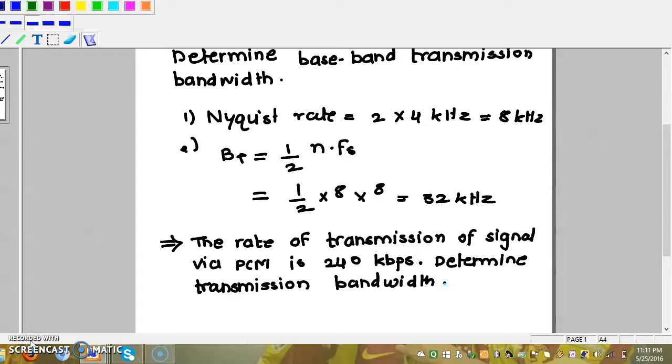Similarly, if the rate of transmission of signal via PCM is, for example, 240 kbps, we have to determine the transmission bandwidth required. Since the rate of transmission is 240 kbps, bandwidth is half of it, which equals 120 kHz.